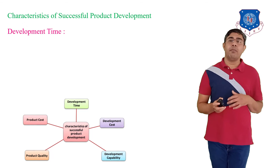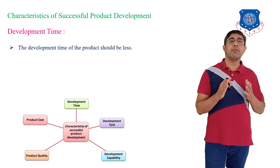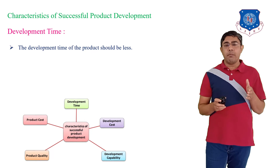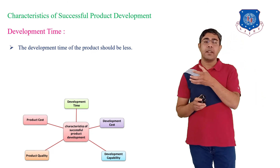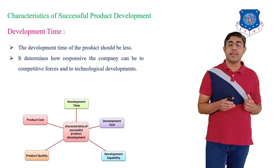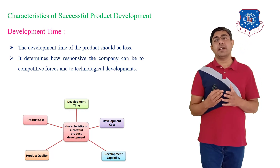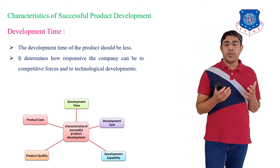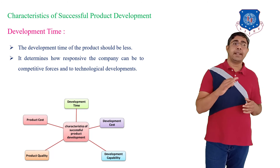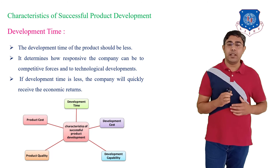The second dimension is development time. The development time of the product should be less. As you develop your product, the development time should be as short as possible. If your development time is less, your product can launch in the market within a short period and you will get maximum profit. It also determines how responsive the company can be to competitive forces and technical developments. If the development time is less, the company will quickly receive the economic return.